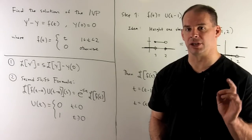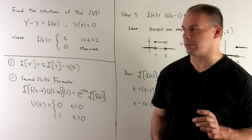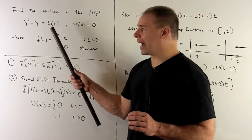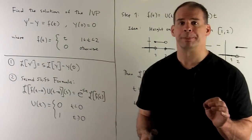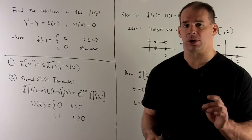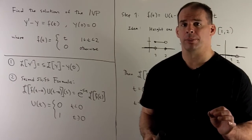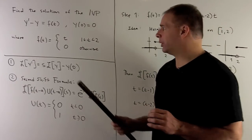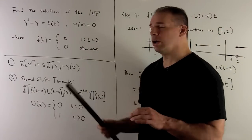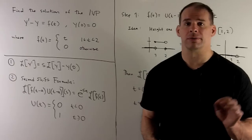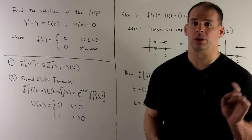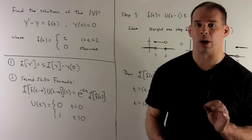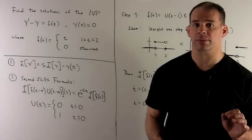Find the solution of the initial value problem: y prime minus y equals f of t, y of zero equals zero, where f of t is equal to t on the interval from one to two, including one, and zero everywhere else.